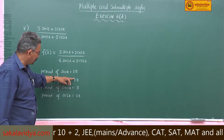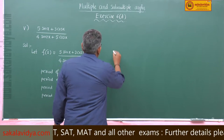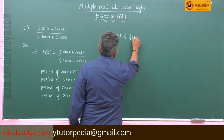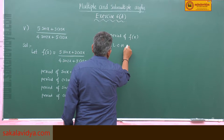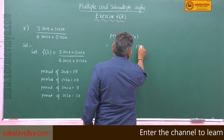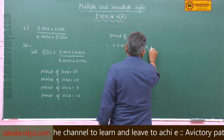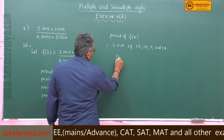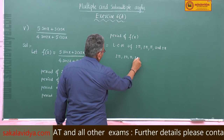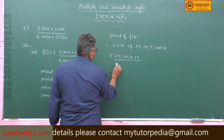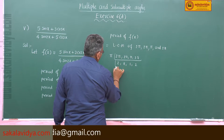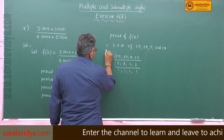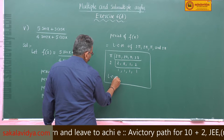Now, LCM of the periods: LCM of 2π, 2π, π, and 2π. Taking π as the common factor — 2, 2, 1, 2 — dividing by 2 gives 1, 1, 1, 1. So the LCM is equal to 2π.